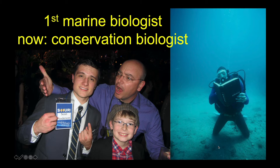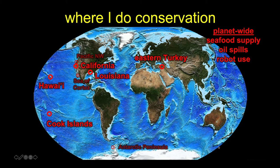Even though some people try to impersonate me — like Josh Hutcherson, who played a character named after me in a movie — mostly what I do is not in the limelight. I do a lot of stuff that people don't see, and I do this stuff all over the planet. The places in bright red on the map are where I currently work — from the tropics to California, and elsewhere around the planet. I have a lot of work in Louisiana, which is kind of close to Texas.